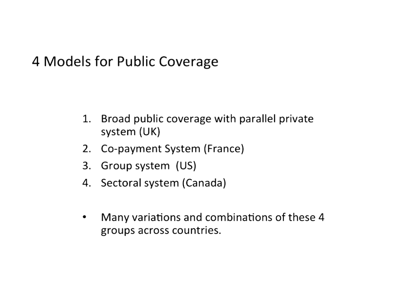The third model was a group-based system — part of the US is an example, where certain groups fall into certain kinds of coverage. For example, if you are over 65 in the United States, you are eligible for public coverage under Medicare, but if not, you don't get that coverage. The fourth was a sectoral system — Canada was the example — with broad public coverage for certain types of services but no or limited public coverage for others, such as pharmaceuticals or dental.